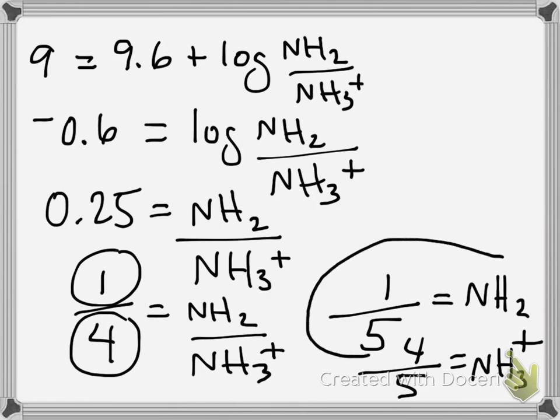So one-fifth deprotonated amino group at pH 9, and four-fifths have a protonated amino group at pH 9.